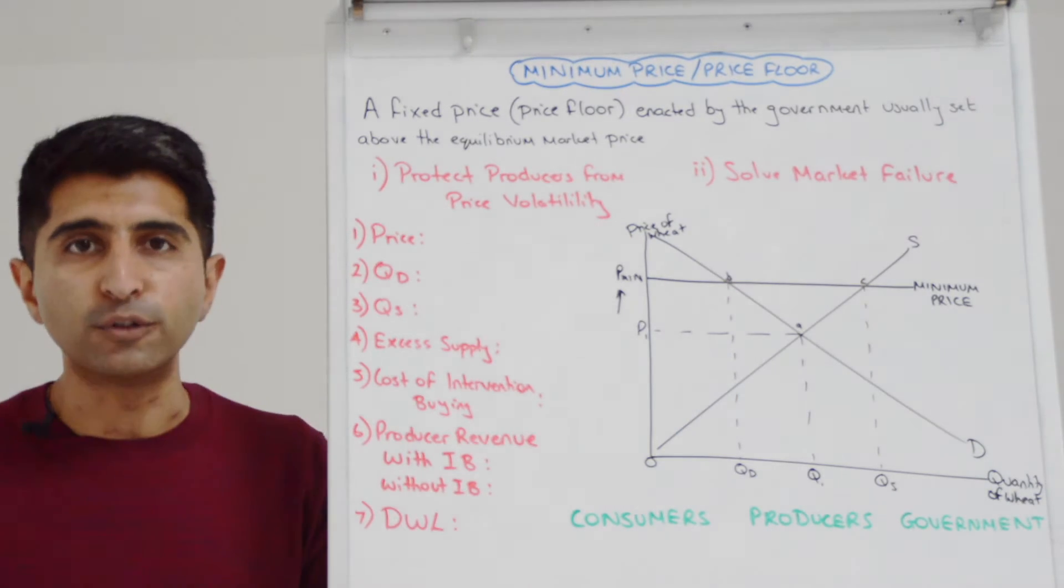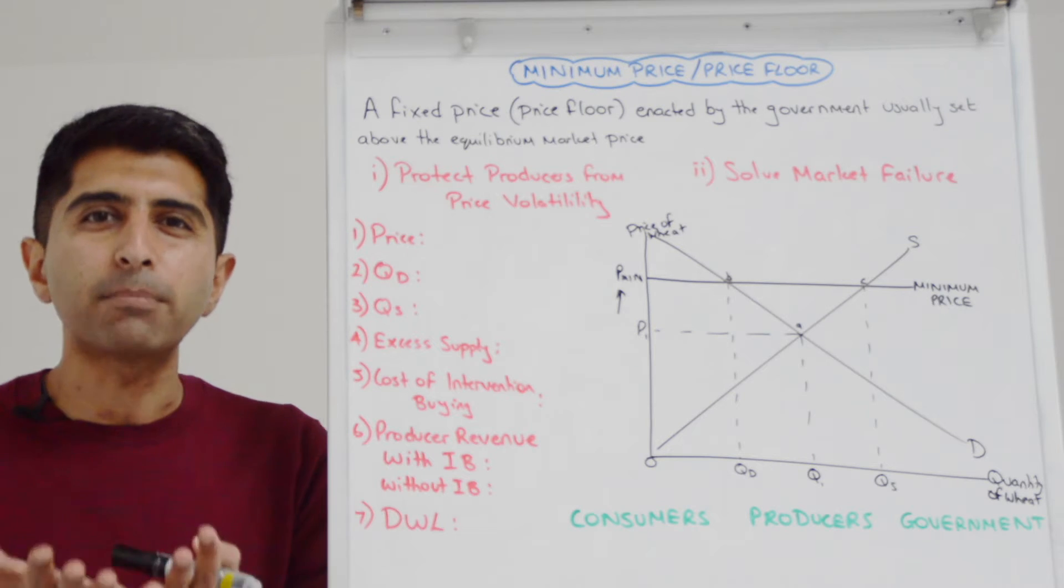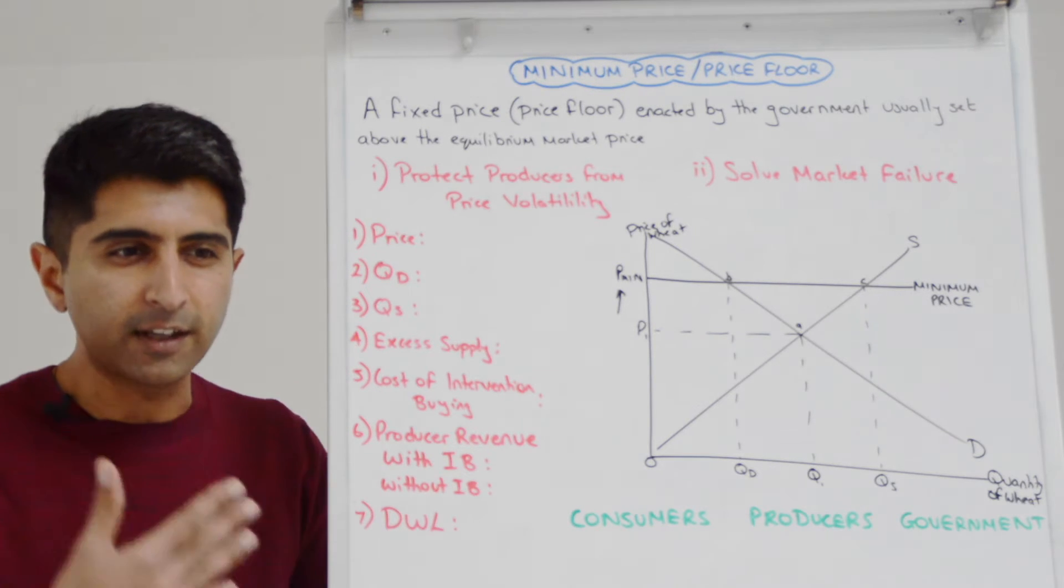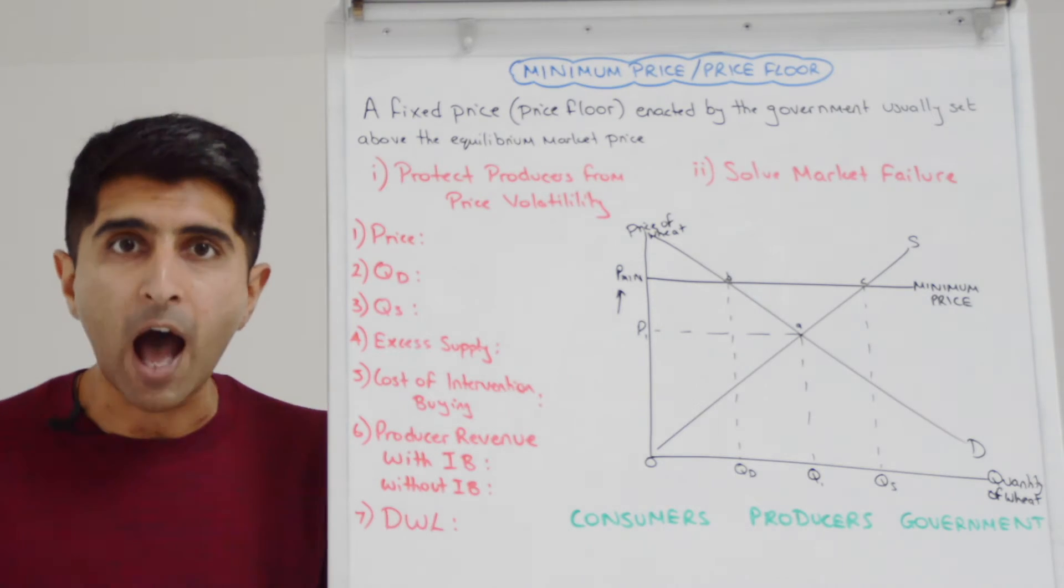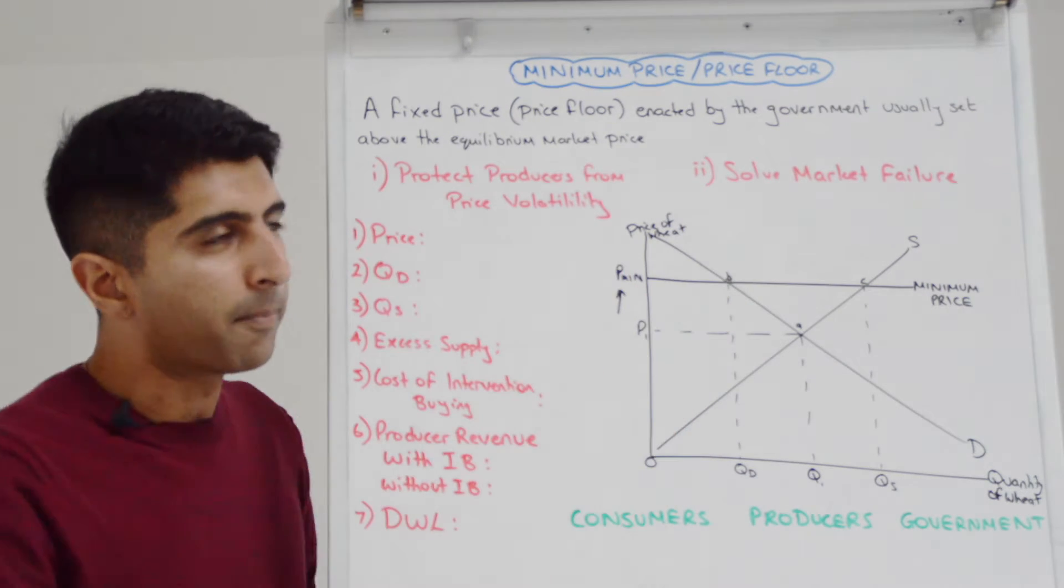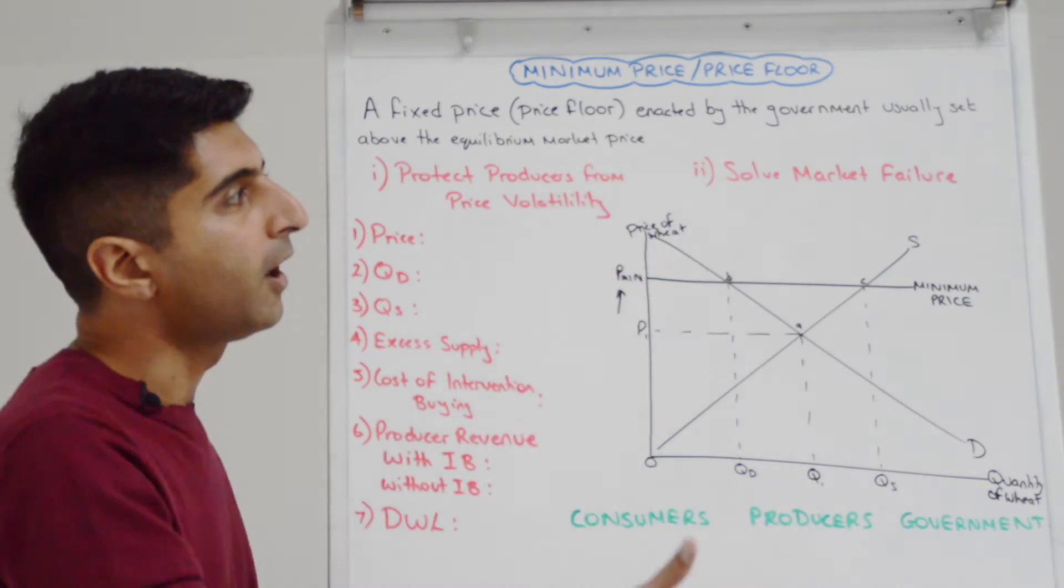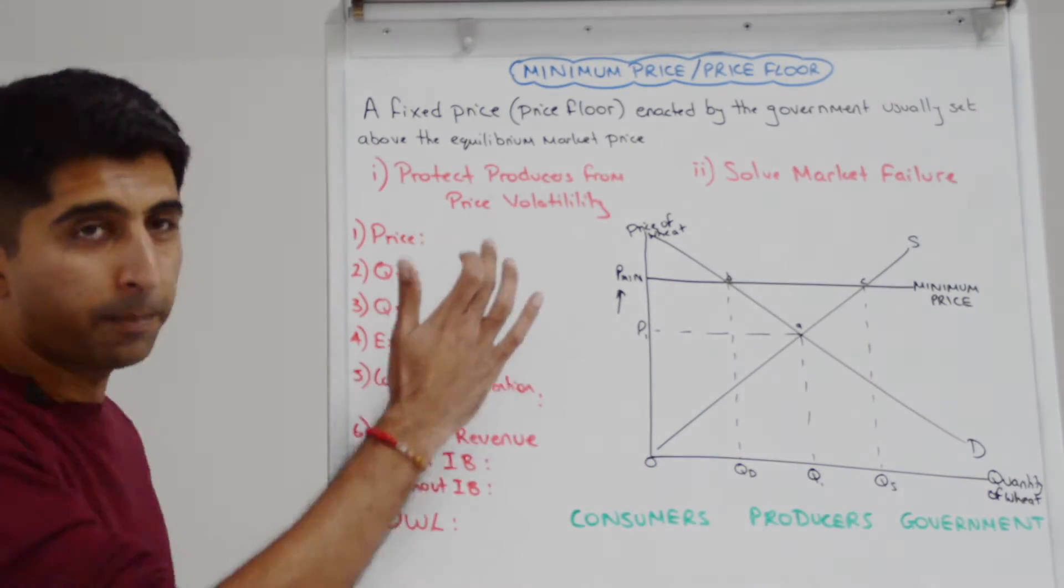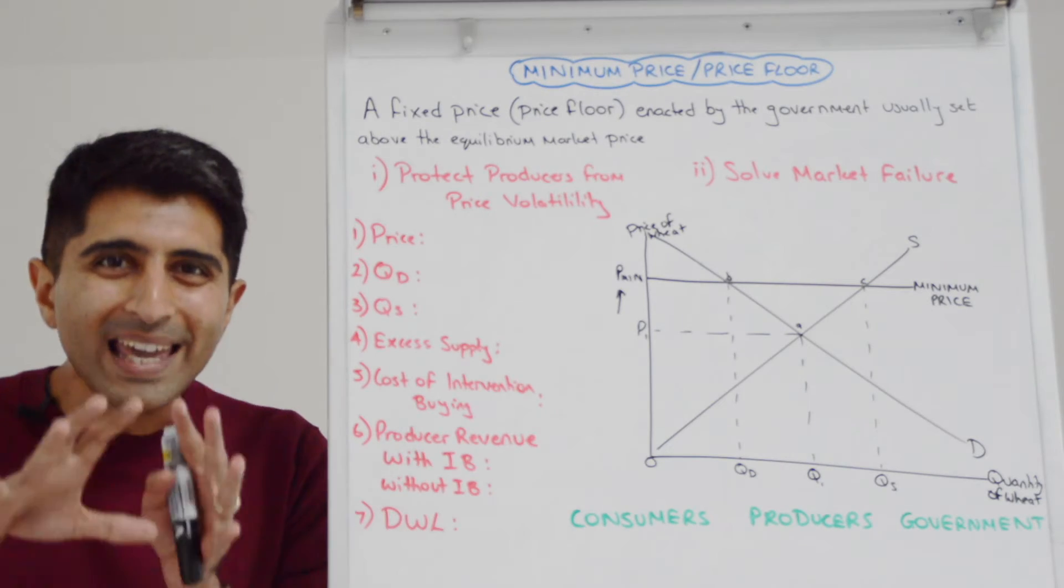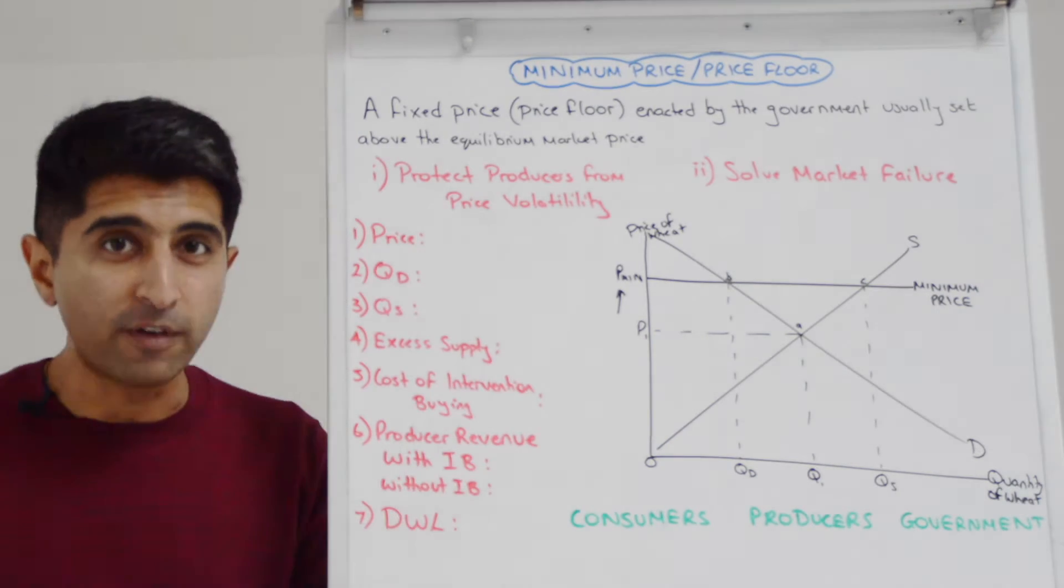But equally, minimum prices can be used to solve market failures by raising price in the market, discouraging consumption, discouraging production of goods and services that do a lot of harm to society. So minimum prices on alcohol are good examples of that. But in this video, we're going to focus on this core purpose and we're going to look at the key impacts diagrammatically of a minimum price.